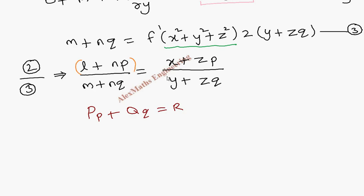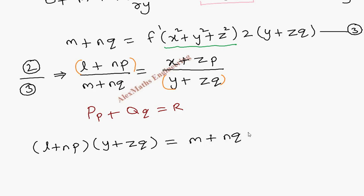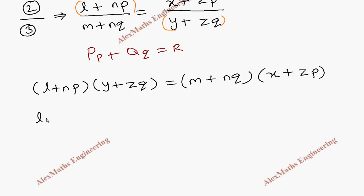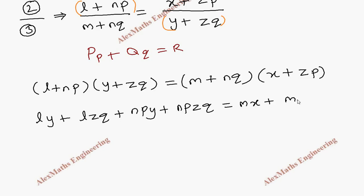So we are going to cross multiply. We get (L + n·p)(y + z·q) equal to (m + n·q)(x + z·p). Expanding the left side: L·y + L·z·q + n·p·y + n·p·z·q, equal to the right side: m·x + m·z·p + n·q·x + n·q·z·p. On both sides, n·p·z·q appears and can be cancelled.